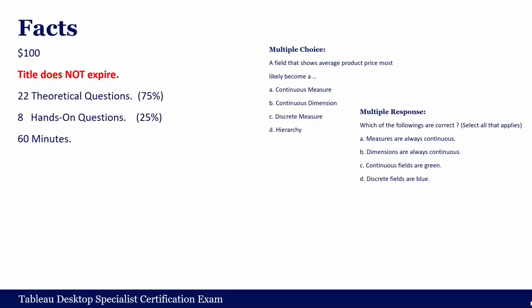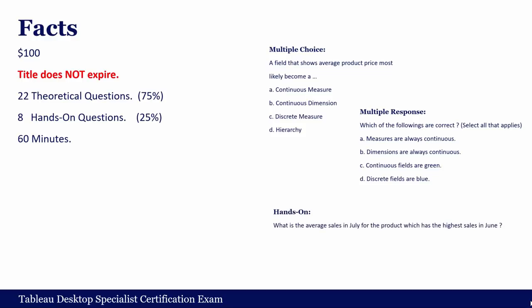Multi-response questions are a little bit tricky, but it won't take more than 2 minutes if you know the concepts. In hands-on questions, you will connect to data sources, create some charts, and find some numbers. There will be 3 or 4 new datasets in the exam, and hands-on questions take a little more time but also bring more points. They won't ask you to create a beautiful visualization — instead, you have to find a number for a specific case or condition. An example question might be: what is the average sales in July for the product which has the highest sales in June?